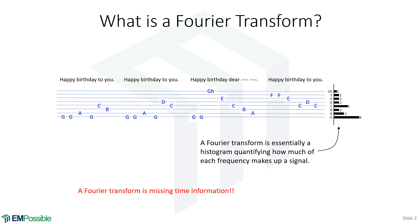The Fourier transform actually calculates complex numbers. So the numbers there are the complex amplitudes of each of those frequencies. They're complex amplitudes because there's both a magnitude and a phase element to that.